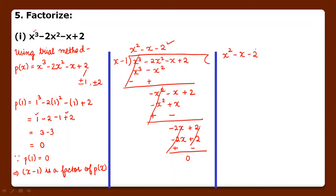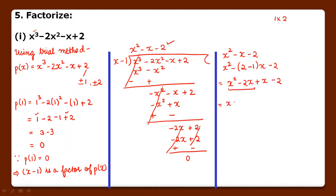Now for factorization of the quadratic: the factors of 2 are 1 into 2. Taking x minus 2 common from these two terms, what remains inside is x plus 1 and x minus 2. We can take x minus 2 as common, and what remains is x plus 1.